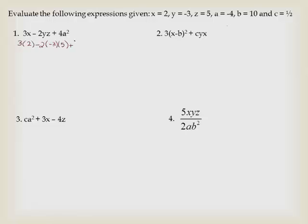Here I have some more variables and values. So I've got x, y, z, a, b, and c. So here I have an x, a y, a z, and an a. x is 2, y is negative 3, z is 5, and a is negative 4, and then that's going to be squared. So I need to do my exponent first.